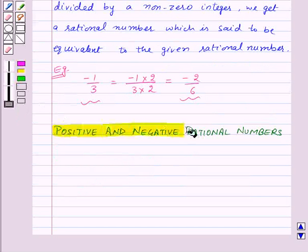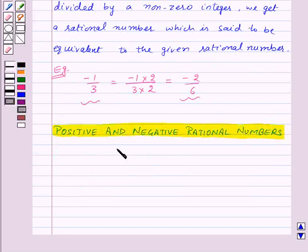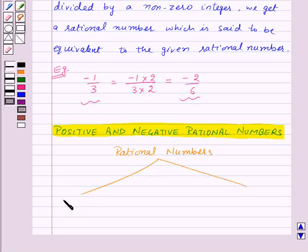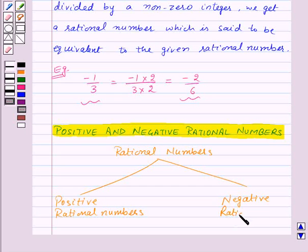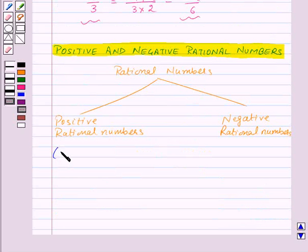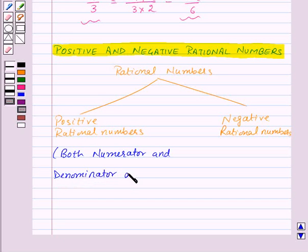Next we have positive and negative rational numbers. Rational numbers are classified as positive rational numbers and negative rational numbers. Rational numbers in which both numerator and denominator are positive integers are called positive rational numbers.